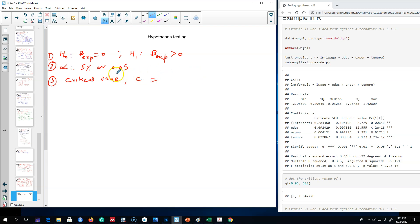This critical value is based on alpha equals 0.05, and you can get this critical value based on two arguments: the level of significance and the degrees of freedom. Our degrees of freedom is 522—there are 526 observations in the data minus k, which is three, minus one for the intercept. Based on these two, we can get the critical value as 1.645.